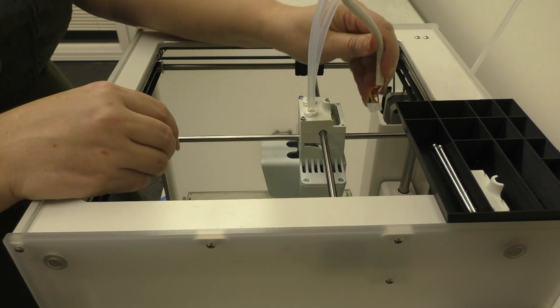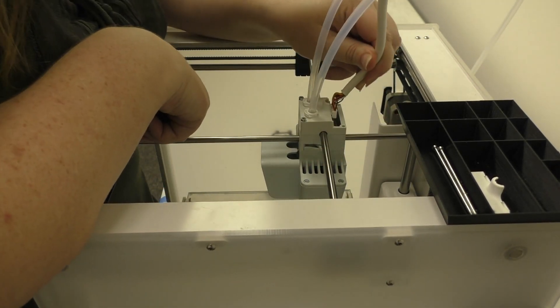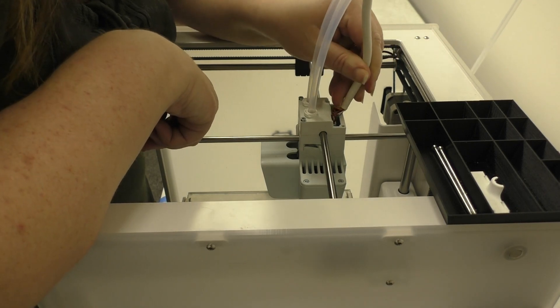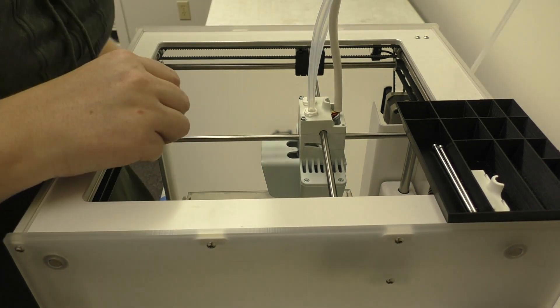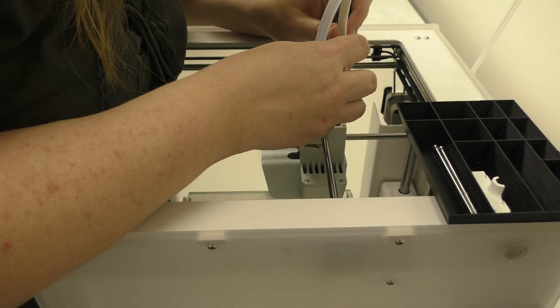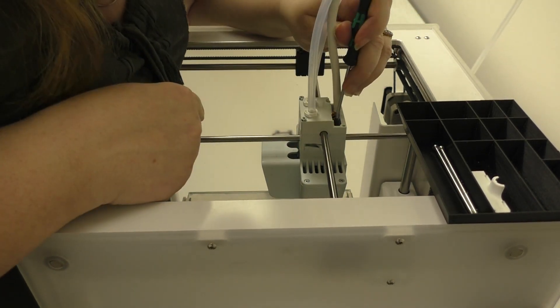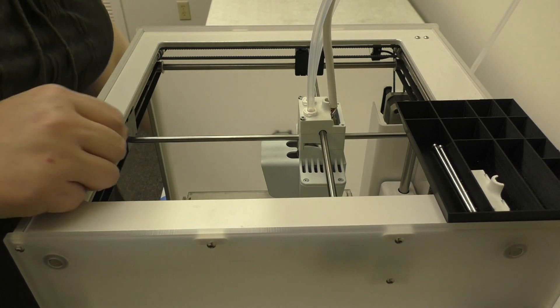Now we'll go ahead and reseat the print head cable. So in general, you should be able to go ahead and just press it back down into place. If you're not sure that it quite clicked back into place, you can always take your screwdriver and apply a little pressure to each side of the large plastic connector and make sure that it's seated. It should click into place.